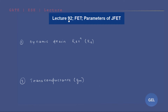We are in lecture number 92 of EDC. This is the field effect transistor module — the sixth module. This is the last video lecture on J-FET, and the next video lecture will get into MOSFET. In this video lecture we're going to cover four important parameters before finishing J-FET.